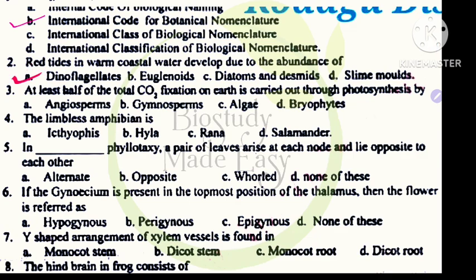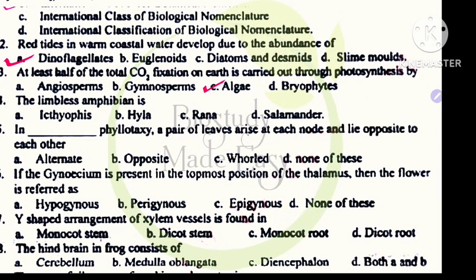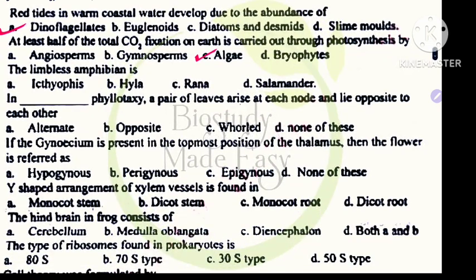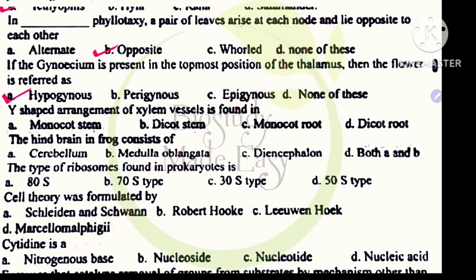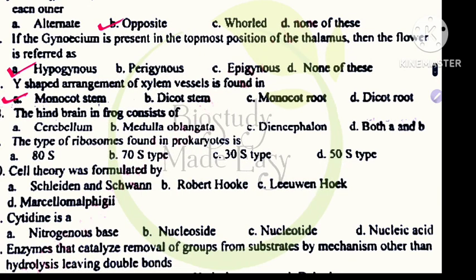Next, red tides caused by dinoflagellates. Half of the carbon dioxide fixed by algae. Limbless amphibian ichthyophis. Opposite phyllotaxy. Gynosium topmost position, hypogynous flower. Y-shaped xylem vessels in monocot stem. Hind brain of frog cerebellum medulla oblongata, so D option, both A and B.